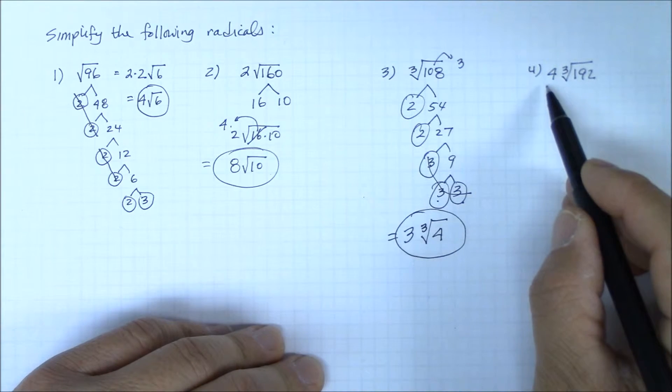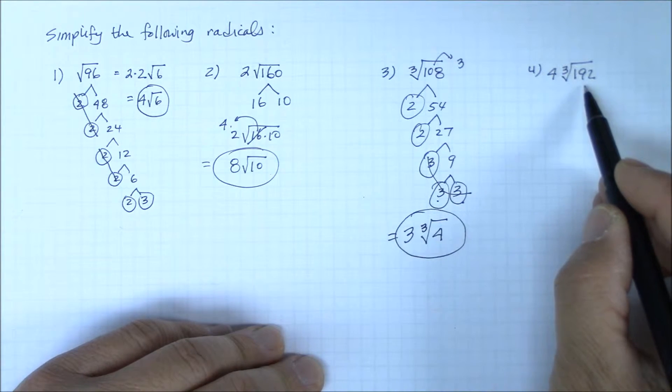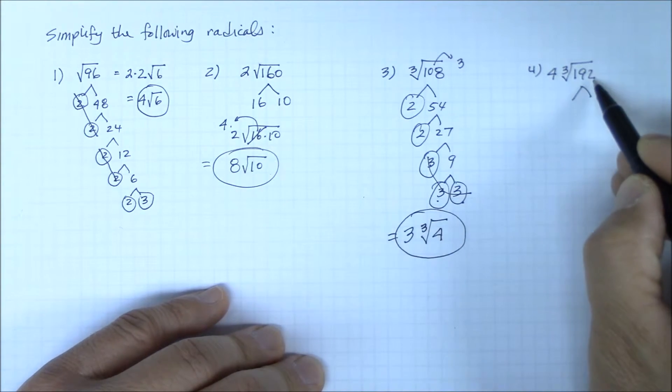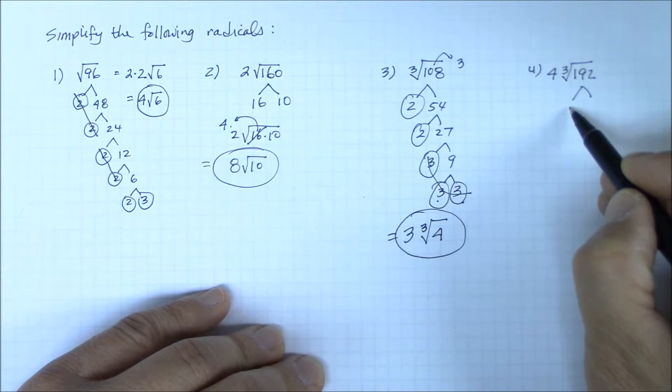And number 4? I'm not sure if 192 is a perfect cube of any number, so let's do the prime factorization again. It's an even number, so I'm going to start with 2.